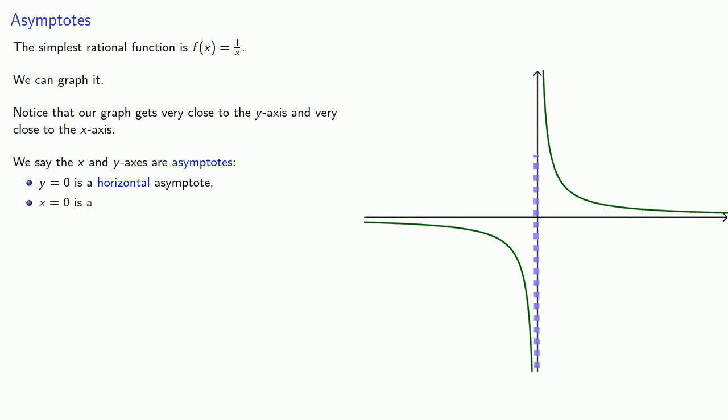And x = 0. Well, this runs vertically, so let's call this an up and down asymptote. Let's call it a vertical asymptote.